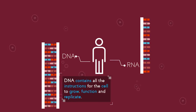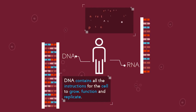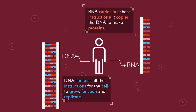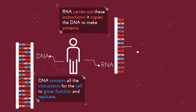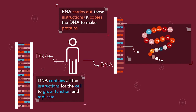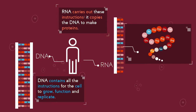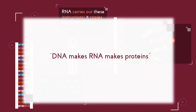DNA is the blueprint — it contains all of the instructions for the cell to grow, function, and replicate. RNA carries out these instructions; it copies and transfers the genetic code from the DNA to ensure the relevant proteins are made. So just think of it this way: DNA makes RNA and RNA makes proteins.